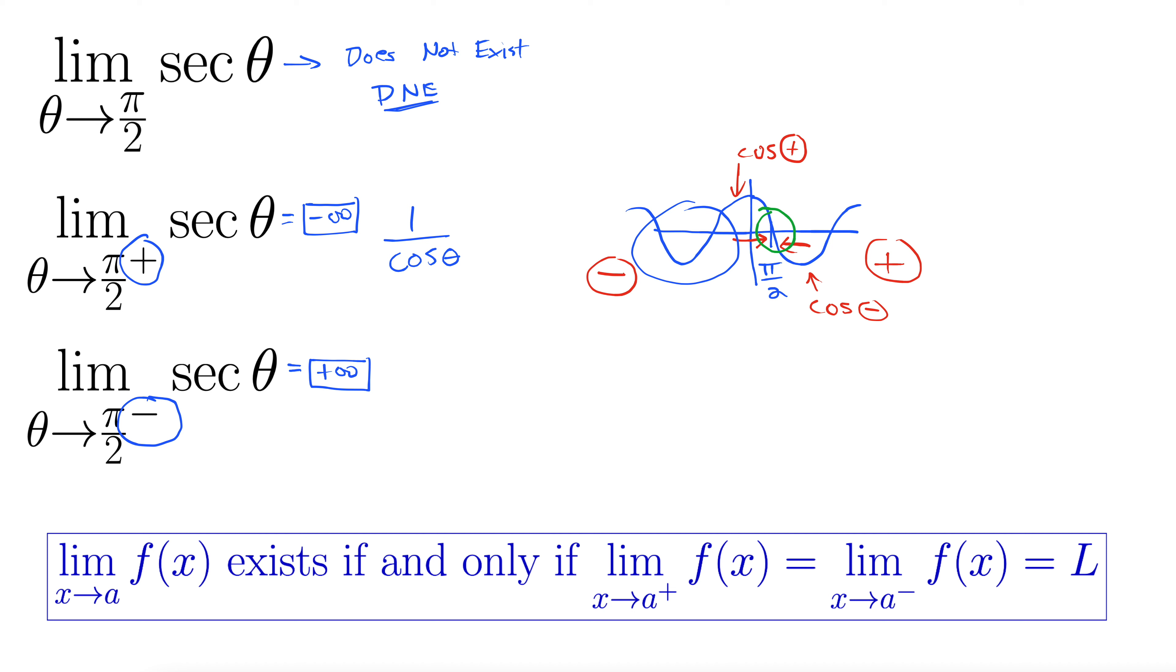Another way to approach this that's interesting is instead of using the graph, choose quadrants. And remember this: all students take calculus. So as we approach from the positive direction, we're coming in this way. Then only sine is positive, so cosine is negative. And as we approach from the negative direction, all are positive, so cosine is positive. You can get the same result using that method as well.